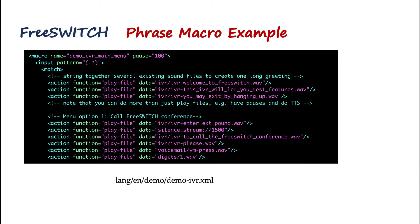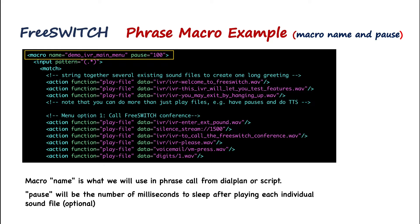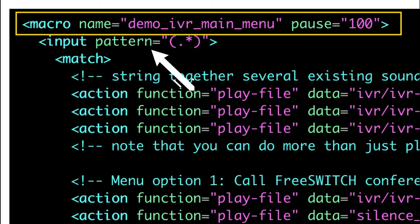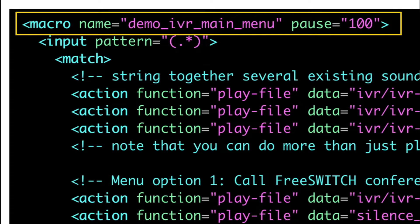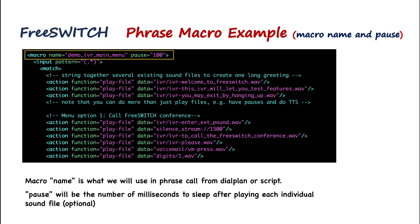Let's explore one of the well-known phrase macros in FreeSWITCH located in the demo folder. The file is demo-ivr.xml, in the FreeSWITCH configuration folder under lang/en/demo. This phrase macro pieces together shorter prompts used in the demo IVR. The macro name is the name we will use later in the dial plan to call this phrase. The pause option sets the number of milliseconds to sleep after playing each individual sound file — for example 100 milliseconds of silence before the next sound file.